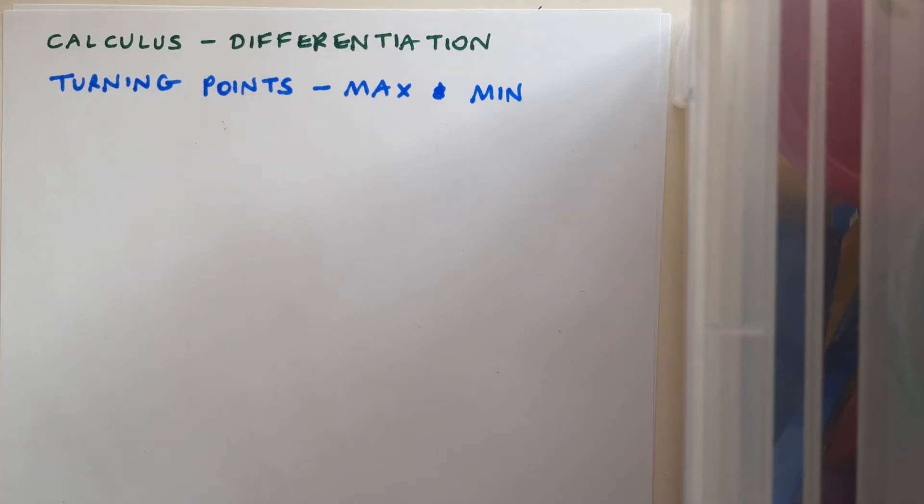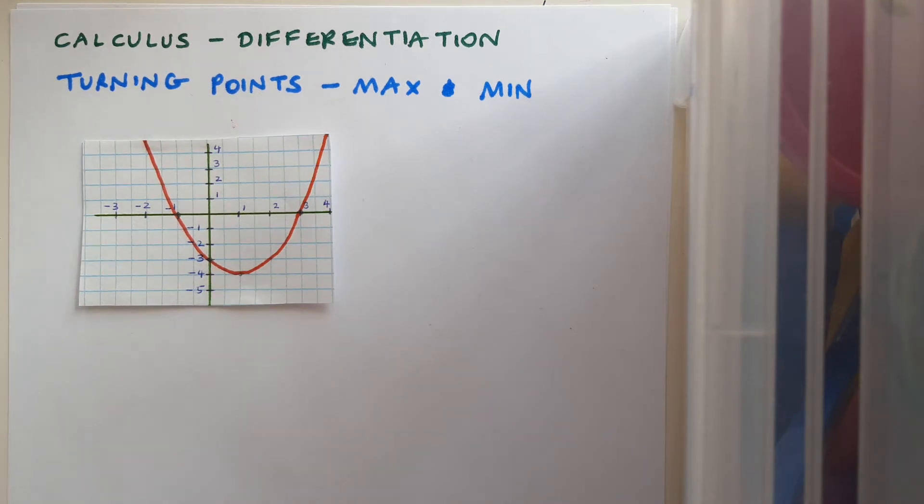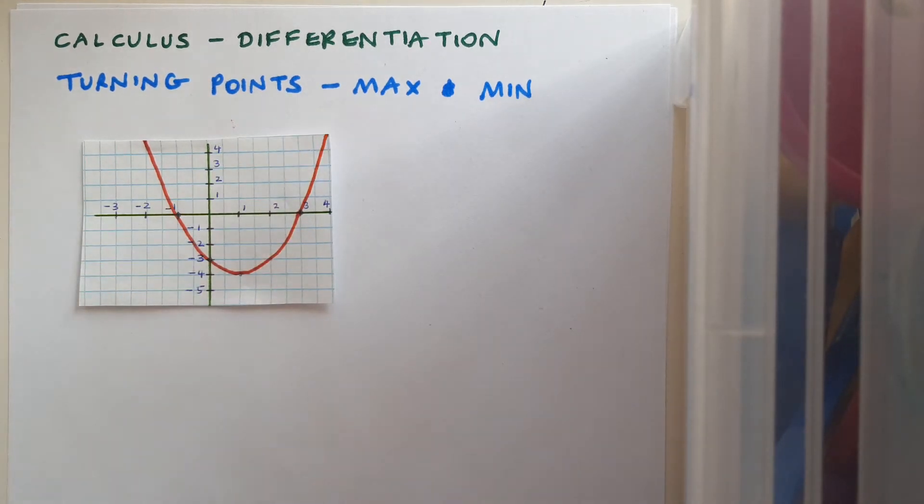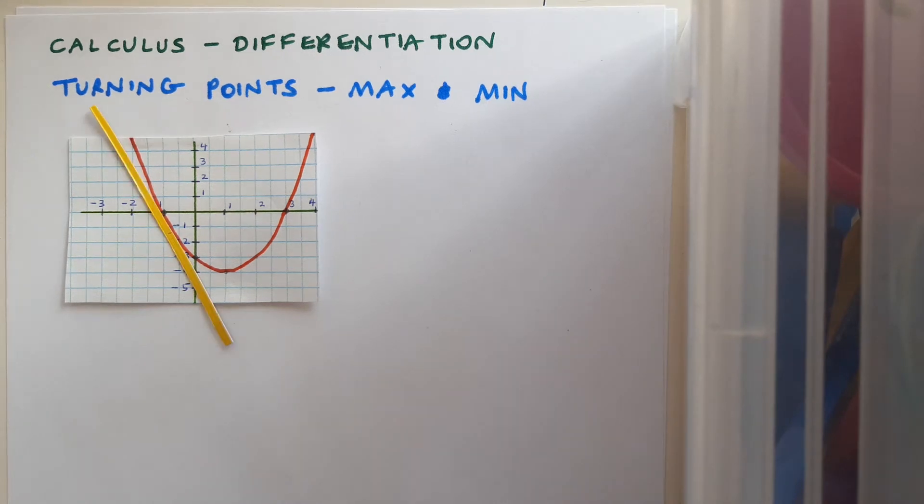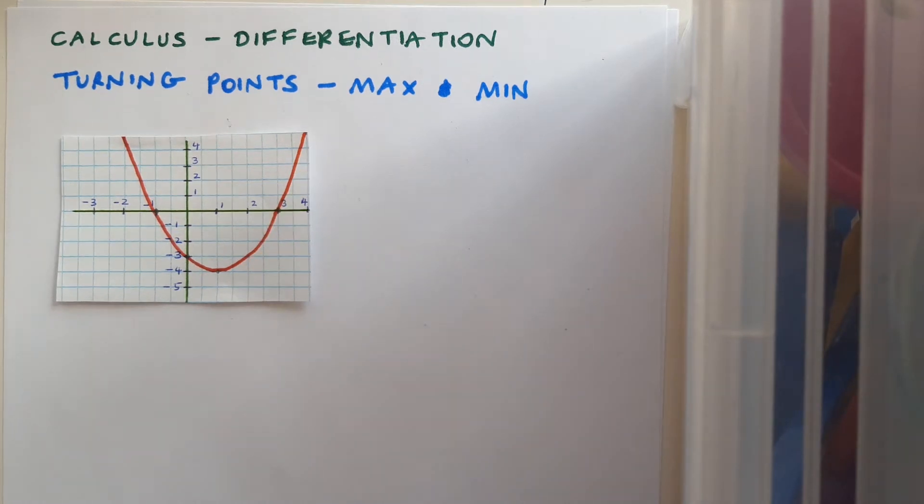This video is about differentiation and calculus, specifically about turning points, which are also called max and min points. We've already spoken about how functions can be increasing or decreasing. When they're sloping down they're decreasing. When they're sloping up they're increasing.